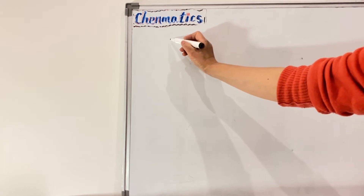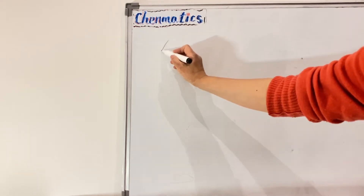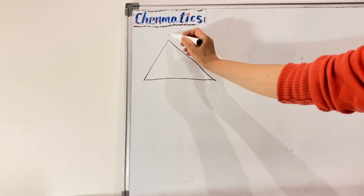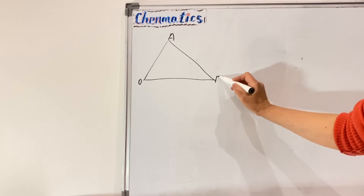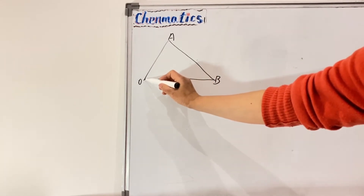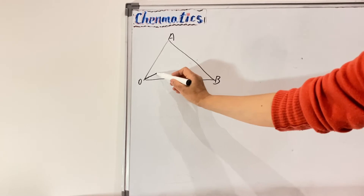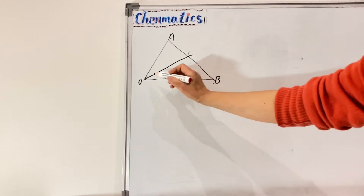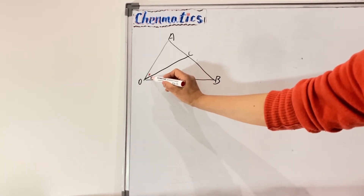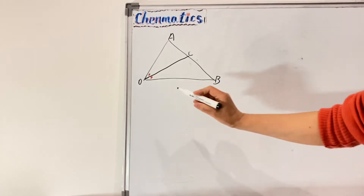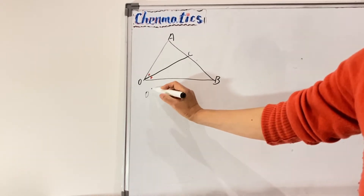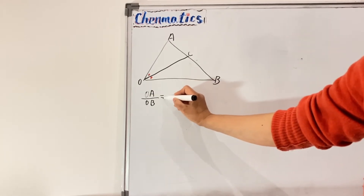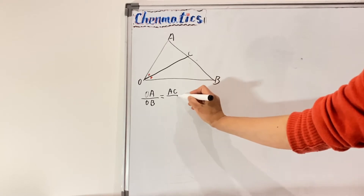Here is triangle OAB, and the angle bisector of O meets AB at C, so these two angles are equal. We need to prove that OA over OB equals AC over CB.